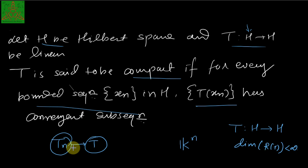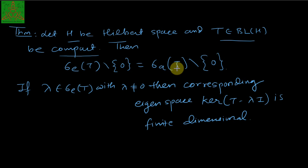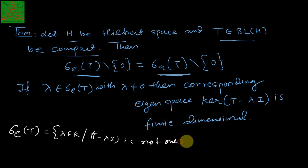Here we are talking about the spectrum of a compact operator. The first result tells you that H is a Hilbert space and T is a bounded linear compact operator. It states that the eigenspectrum other than zero — that is, the nonzero approximate eigenvalues of T — are also eigenvalues of T. The eigenspectrum of T is defined as the set of all scalars λ such that T minus λI is not one-to-one.